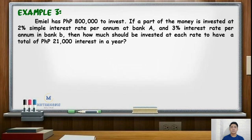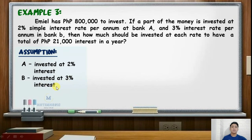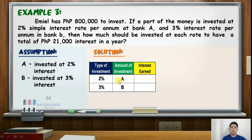Going back to the problem, we will first define our variables. We let A be the amount of investment at 2% interest rate and B be the amount of investment at 3% interest rate. Next, we construct a table. Column 1 is for the type of investment, column 2 is for the amount of investment (A for 2% and B for 3%), and column 3 is for the interest earned in a year: 0.02A for 2% and 0.03B for 3%.